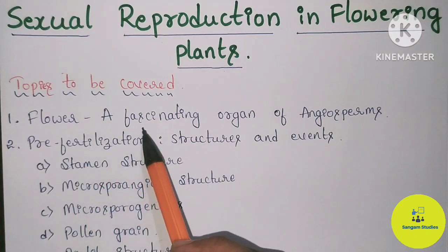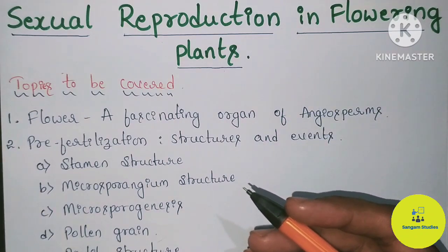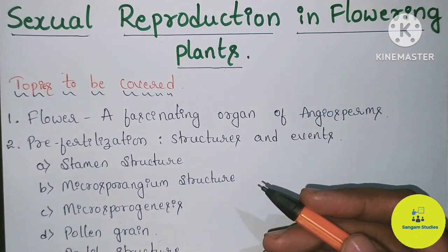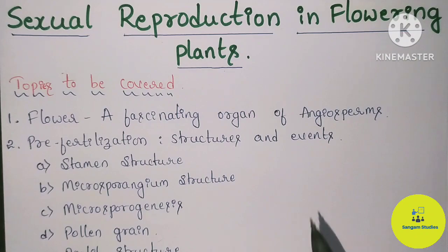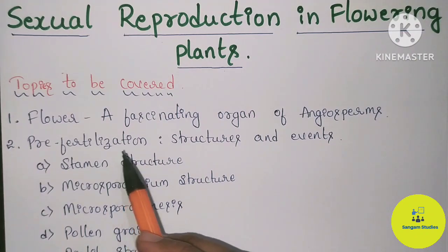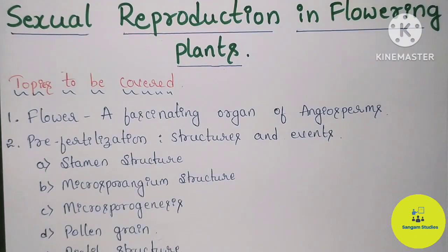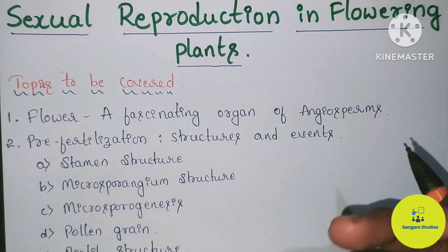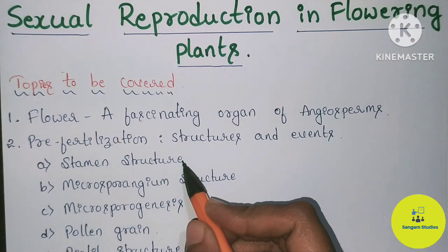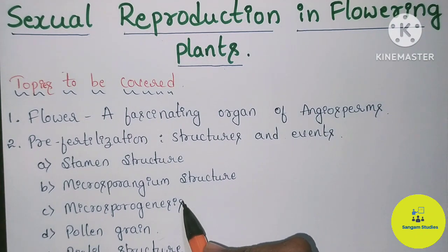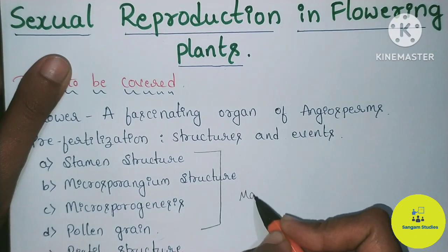The first topic is: Flower is a fascinating organ of angiosperms. Angiosperms also perform reproduction. The main important part is the Flower. Next is Pre-Fertilization Structures and Events. Fertilization is also a part of the events. The first sub-topic is Stamen Structure, Microsporangium Structure, Microsporogenesis, and Pollen Grain. These four topics are related to the male reproductive part.